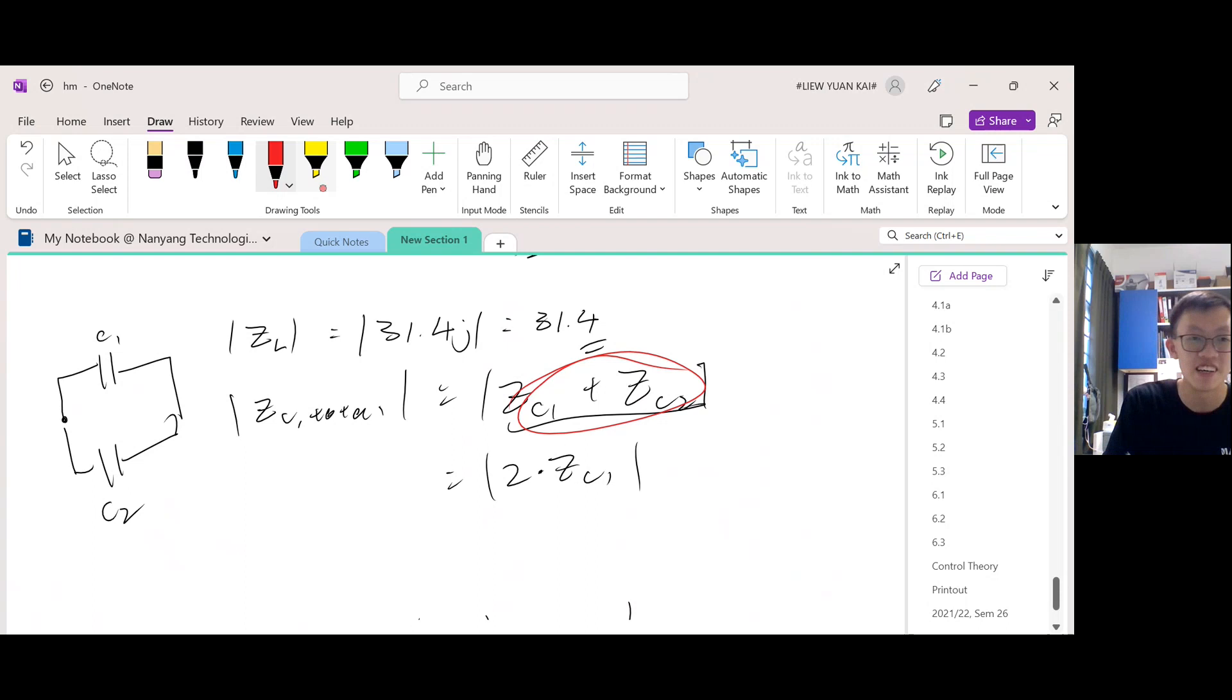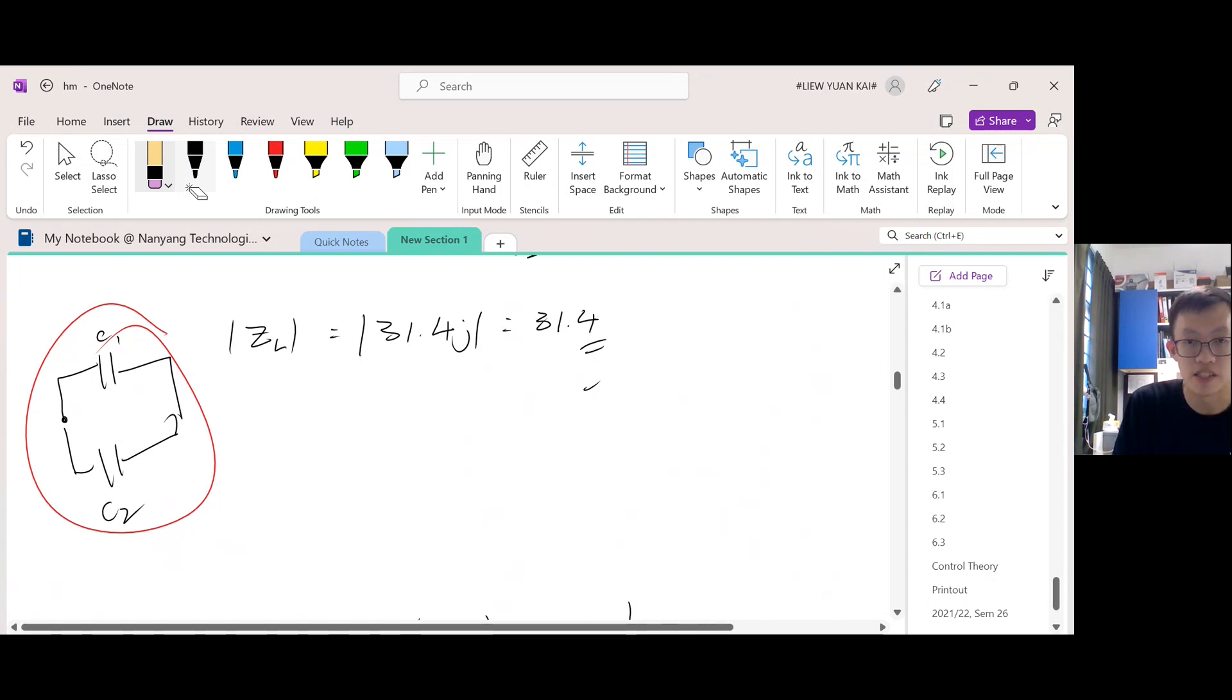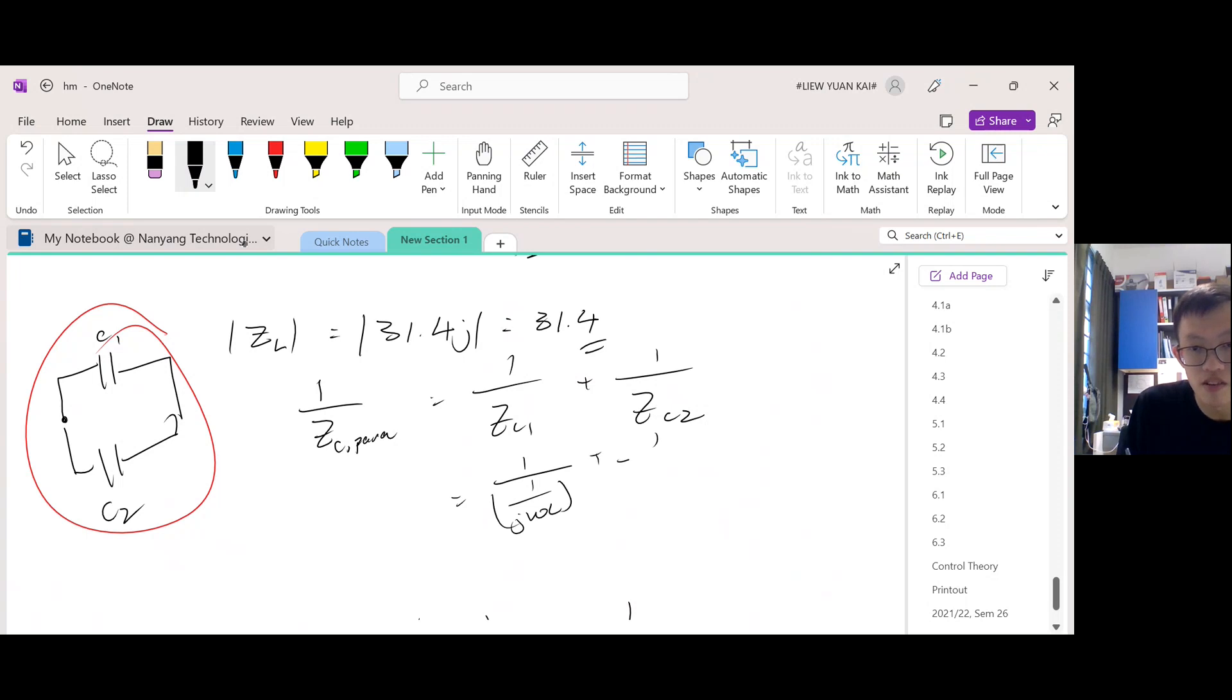Right now they're parallel, so what I should be doing is first find the total impedance in parallel. One over Z_C parallel is equal to one over Z_C1 plus one over Z_C2. The impedance of capacitors formula is one over j omega C, plus one over j omega C. Both of them have the same capacitance, so I will just collectively call them as C.